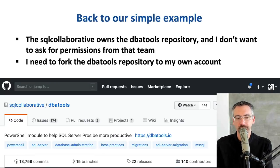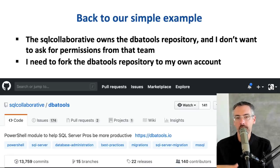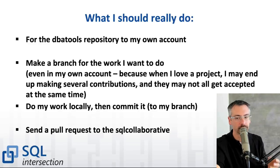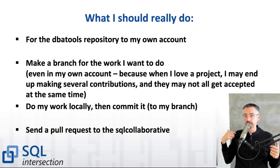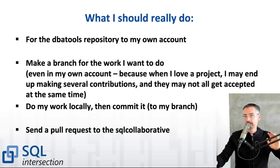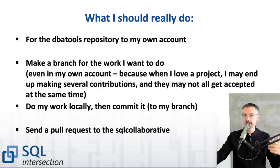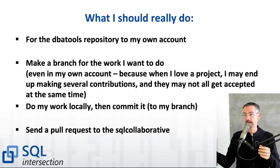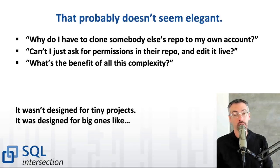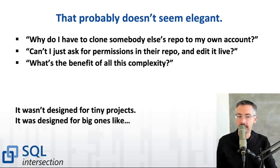Back to my simple example with DBA Tools: the SQL Collaborative owns the DBA Tools repository. What I'd have to do is fork their repository into my own account, make changes inside my own account, and then send a pull request to them saying, 'Can you take my changes into your account?' There will usually be some negotiation — they want to make sure your code is tested properly. I know this seems like a ton of work compared to just saving files back and forth inside your own company. The reality is that GitHub wasn't designed for projects like your personal scripts folder, but I still recommend using GitHub for that — I'll explain why in the recap.